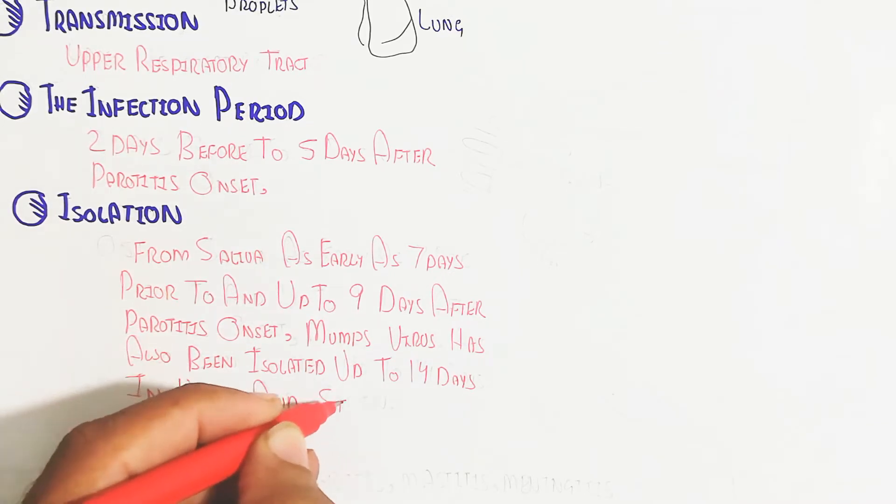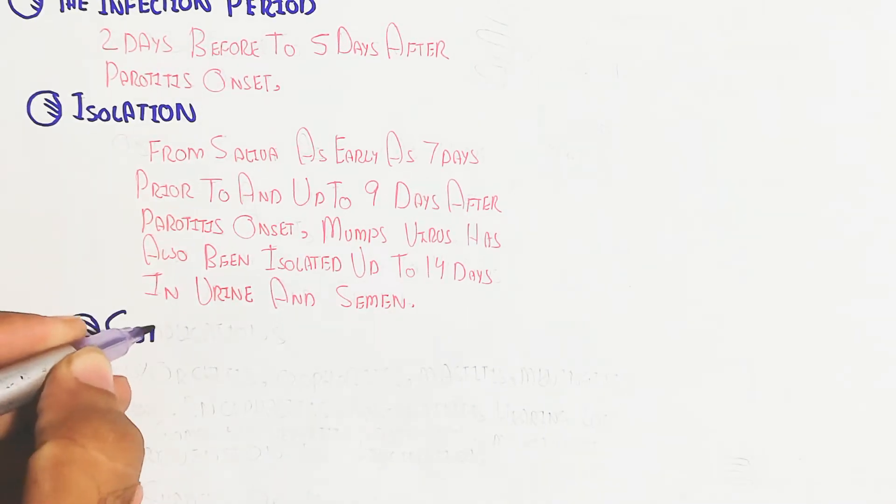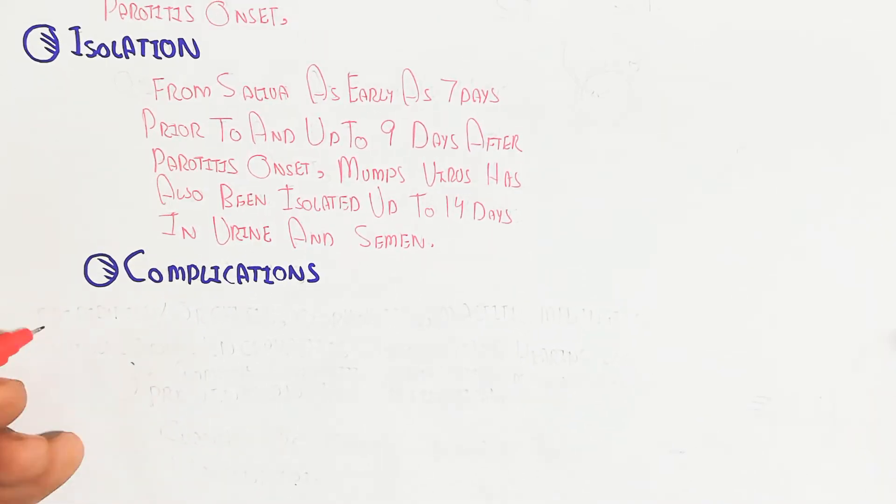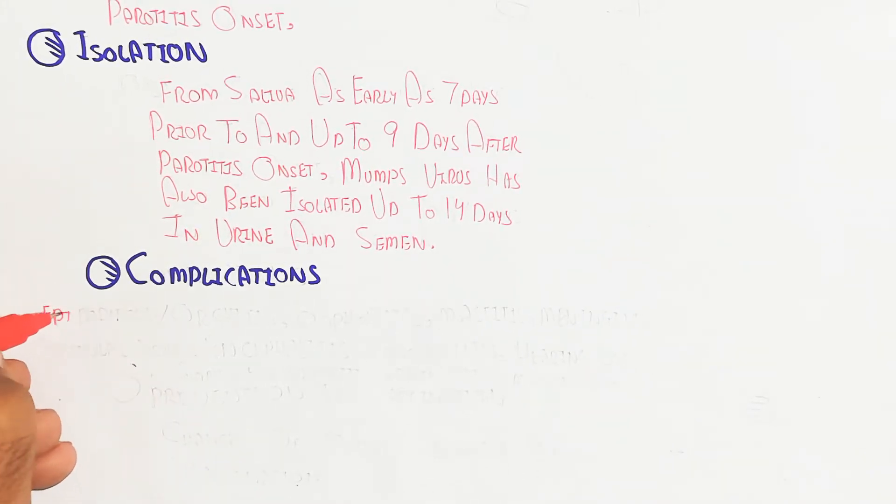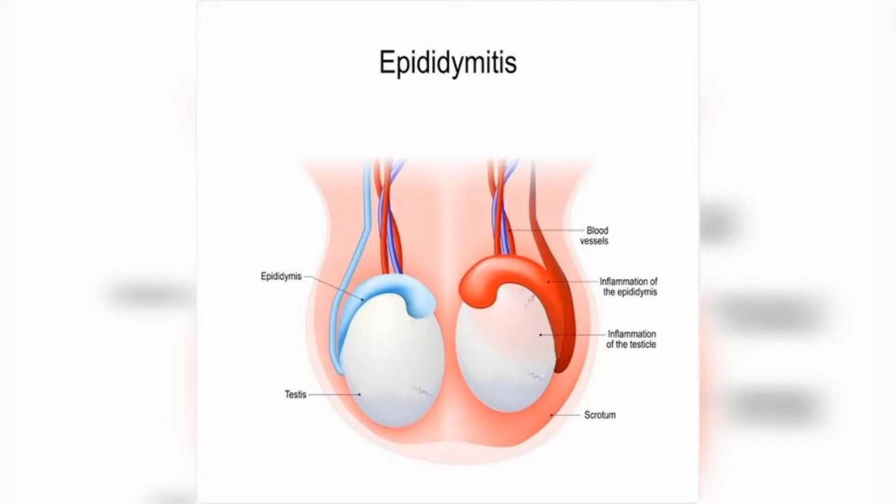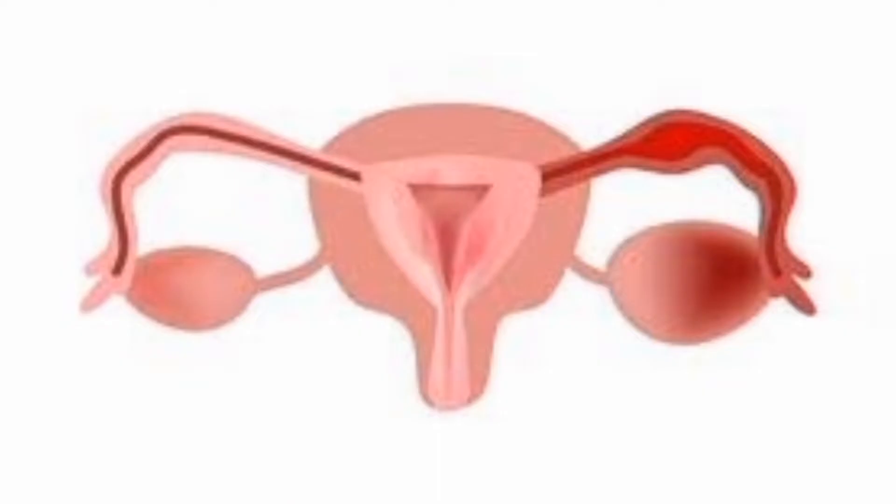Let's begin to understand the complications and how other diseases can be caused due to mumps virus viral infection. Number one is epididymitis. The epididymis will be swollen, inflamed. Orchitis is basically inflammation of the testes. Oophoritis means the ovary and fallopian tube swelling, inflammation. Mastitis means the mammary gland swelling.